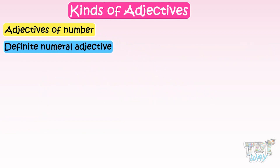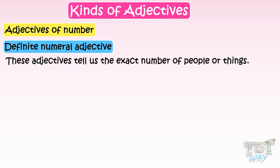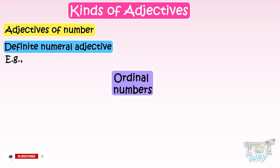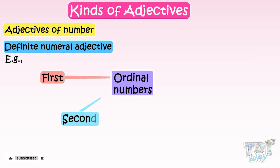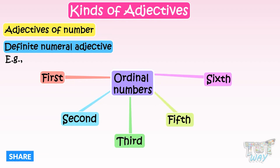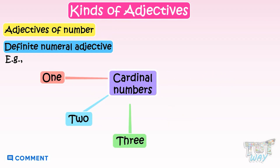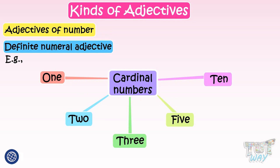The first type is Definite Numeral Adjective. These adjectives tell us the exact number of people or things. For example, ordinal numbers like 1st, 2nd, 3rd, 5th, 6th, etc., and cardinal numbers like 1, 2, 3, 5, 10, etc.